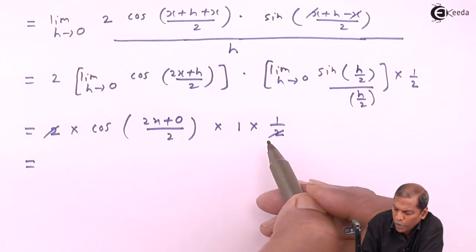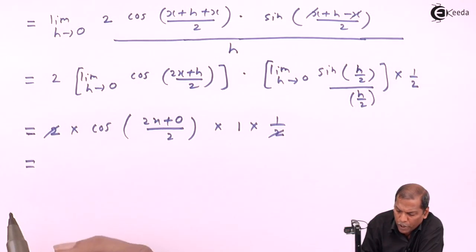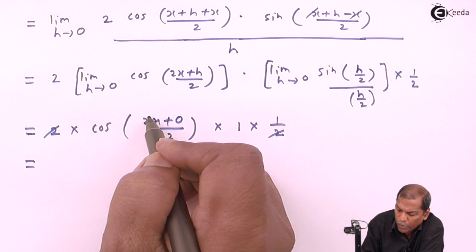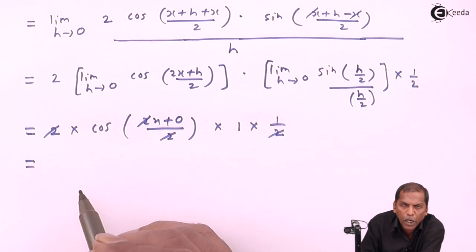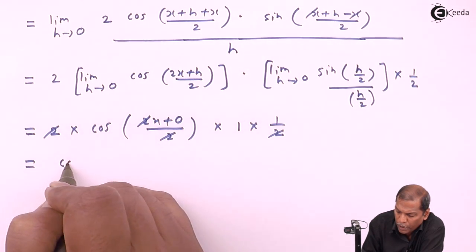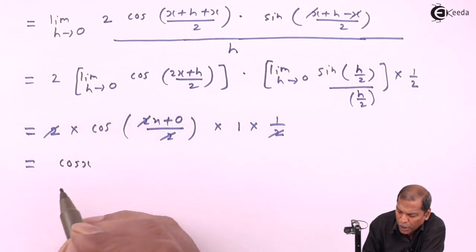Now we cancel 2 from numerator and 2 from denominator. At the same time, we cancel 2 from numerator and denominator inside the cosine function. So finally, we get only cos x.